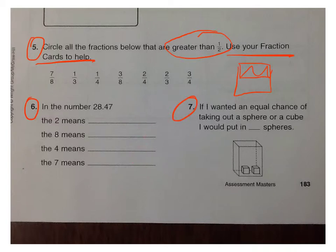Number 7. If you wanted an equal chance of taking out a sphere or a cube, I would put in blank spheres. Notice there are two cubes in here already. You want there to be an equal chance of taking out a sphere or a cube. How many spheres would you put in?